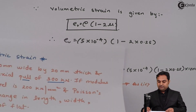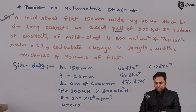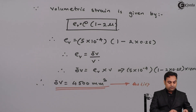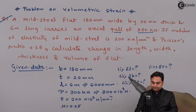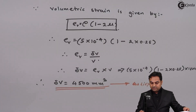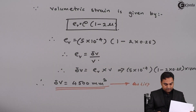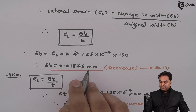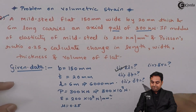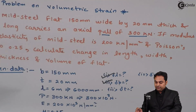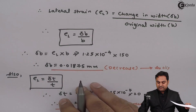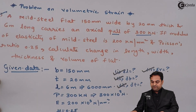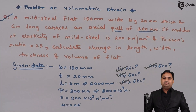To summarize, the four answers are: change in length = 3 mm, change in width = 0.01875 mm, change in thickness = 2.5 × 10⁻³ mm, and change in volume = 4500 mm³. With all four values calculated, the problem is complete.